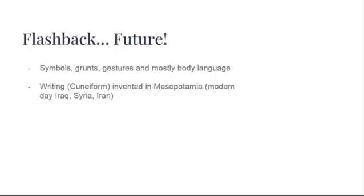Flashback to your social studies in grade 9: Mesopotamia is situated in between the Tigris and Euphrates Rivers. In modern day, it is in Iraq, a little bit of Syria, Lebanon, and Iran.